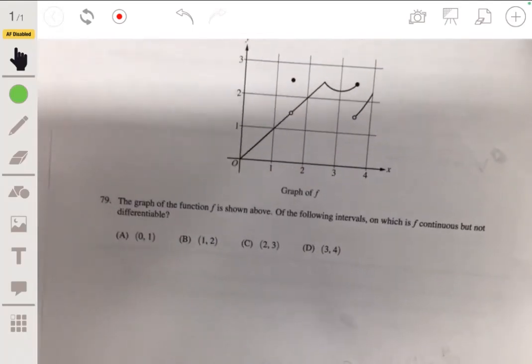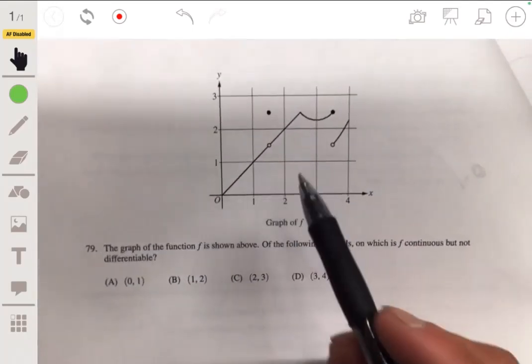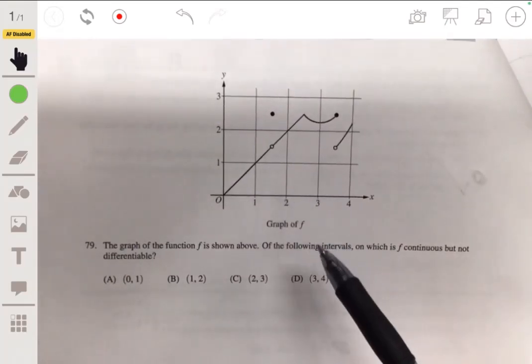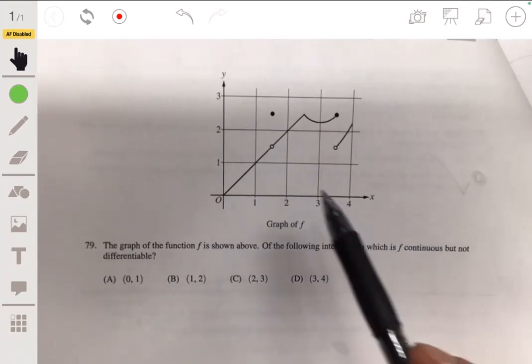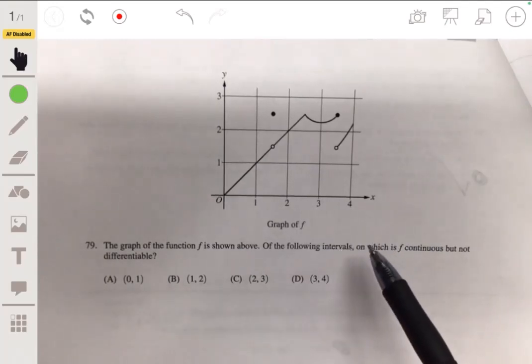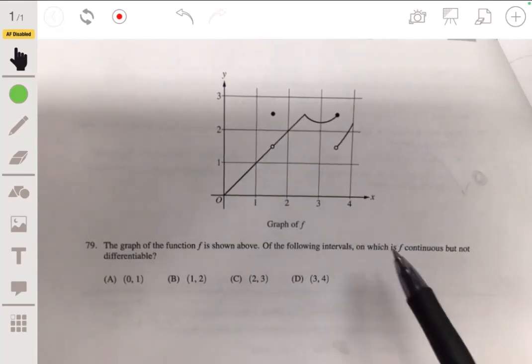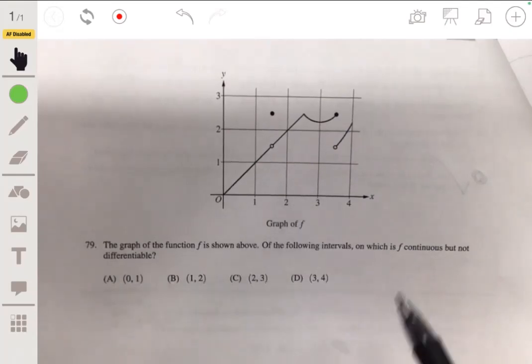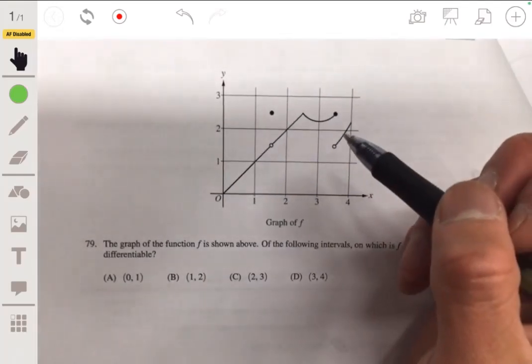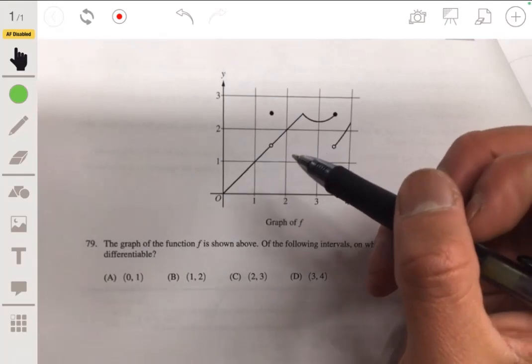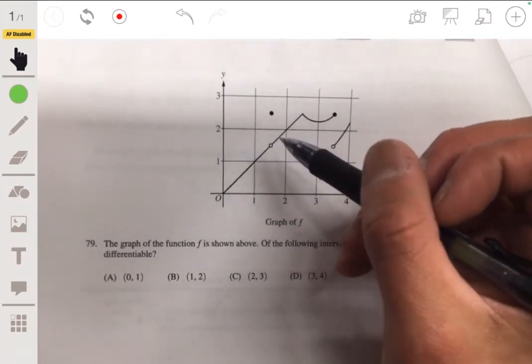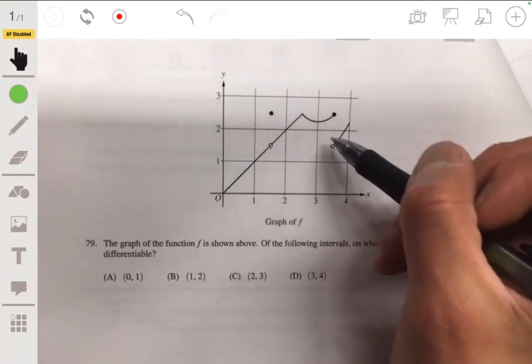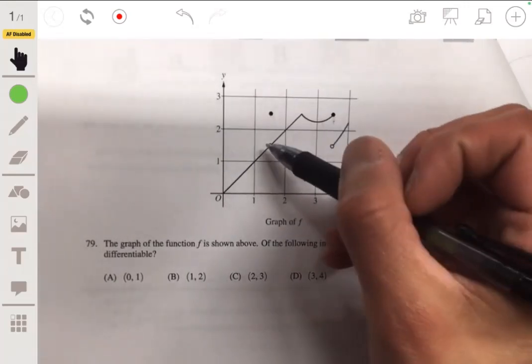Number 79. We're given this graph of f, and we're asked to figure out which intervals f is continuous but not differentiable. Okay, so remember it's continuous when you don't have any holes or points of discontinuity. So there's a point of discontinuity here and here—you've got a jump and a hole here.